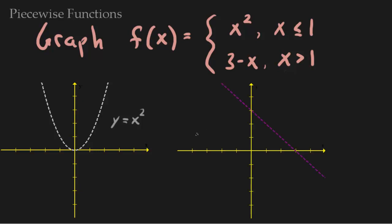Again I did this with a dotted line. If you're not sure how to graph 3 minus x, you can plot some points — you know that it's a straight line. For example, when x is 0 you get the point (0, 3). When x is 1 you get y equals 2. And when x is 3 you get 3 minus 3, which is 0. So you connect these three dots and you get this line.